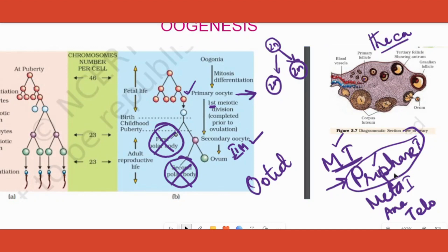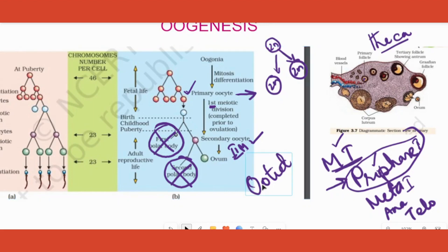The secondary oocyte starts traveling towards the fallopian tube, where it waits for the sperm. Only if it meets the sperm will it complete the second phase of meiotic division, becoming the ootid. Along with that, a secondary polar body is produced, which is degenerated. I hope that is clear — if you understood, please hit the subscribe button.